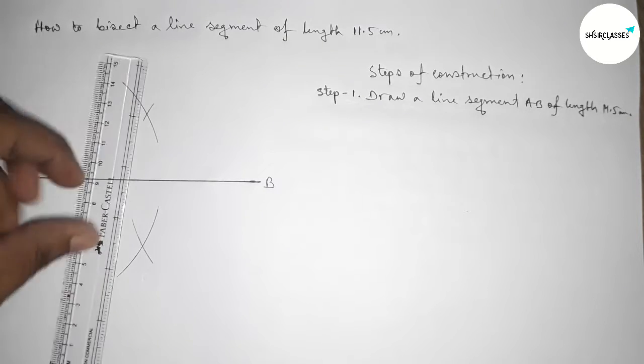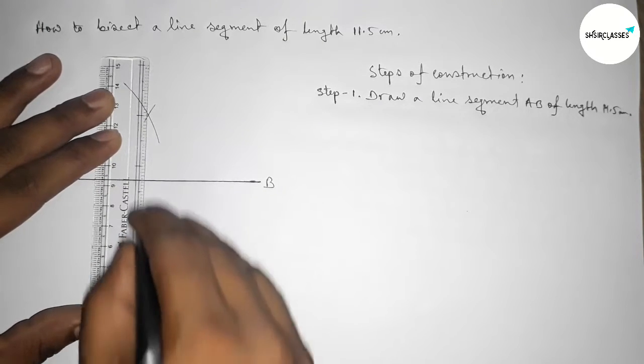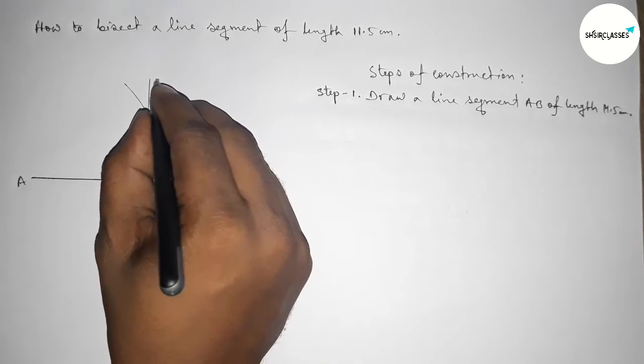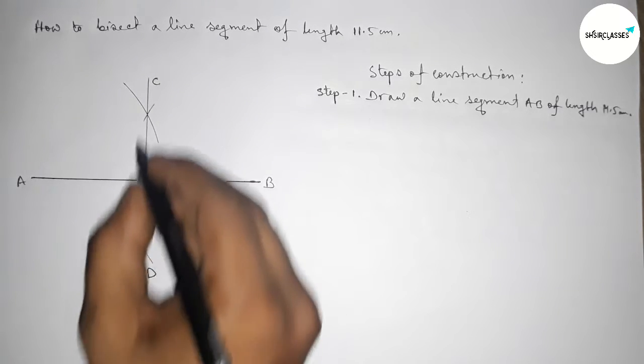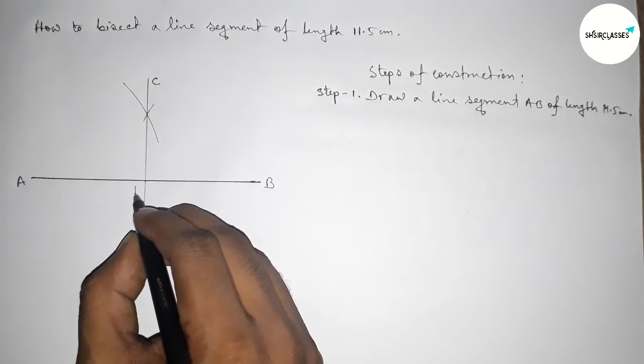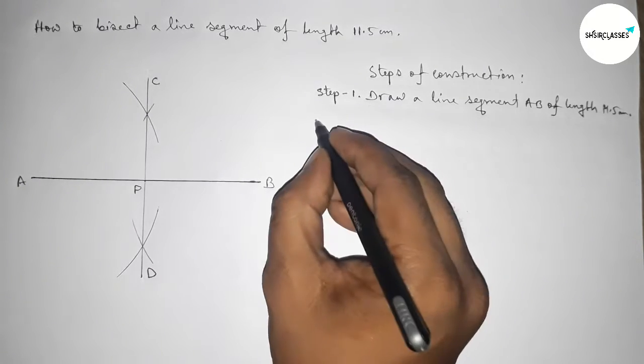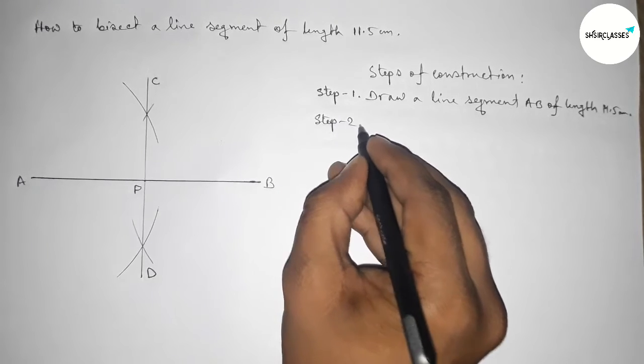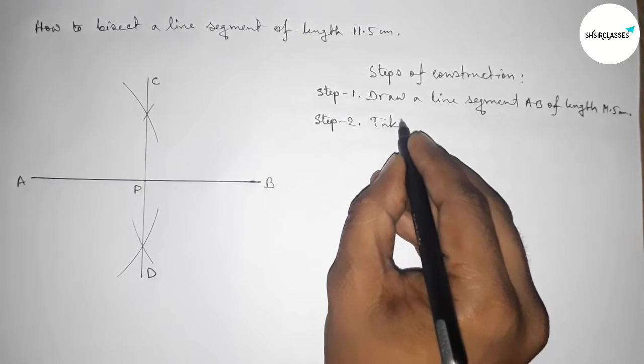So now joining this line. Taking here point C and here D. So the line CD bisects the line AB here at the point P. Now step number two.